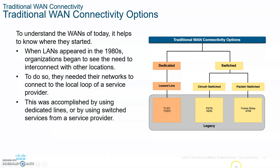Now let's talk about traditional WAN connections. A service provider can offer dedicated lines, meaning no one else uses that physical wire between you and the destination — examples are T1, T3, or their European equivalents E1 and E3. If you don't want a dedicated line, which can be very expensive, you might choose switched networks such as dial-up using the plain old telephone system (PSTN) or an integrated service digital network (ISDN).